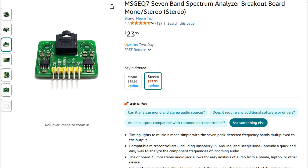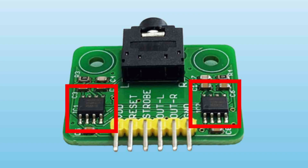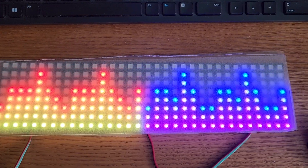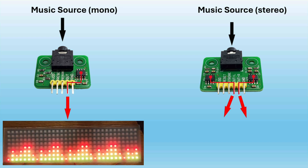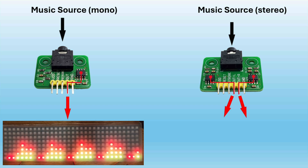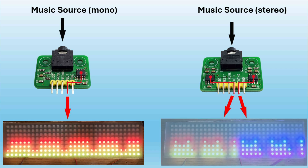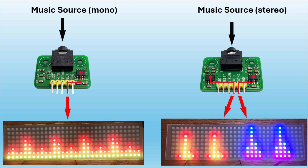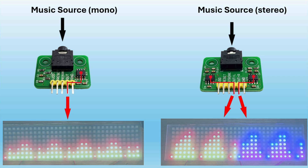This breakout board comes in a mono and stereo version. I have the stereo version, and if you look closely, you can see that it has two of the MSGEQ7 ICs. The mono version just has one. Audio is processed differently for mono and stereo: the mono version combines left and right audio channels into a single signal, representing the overall audio spectrum heard by both ears. The stereo version processes left and right channels separately, each analyzed by its own IC, providing individual frequency band data for true stereo analysis.